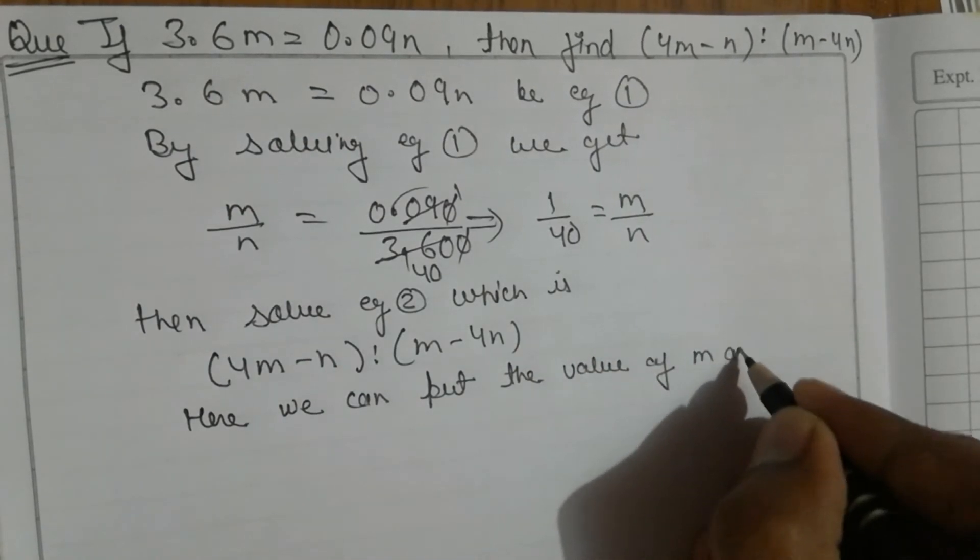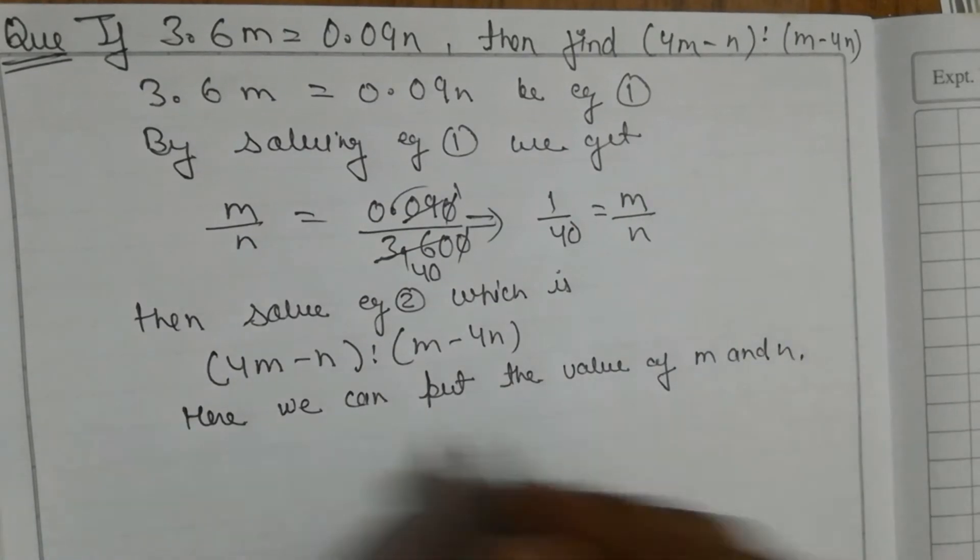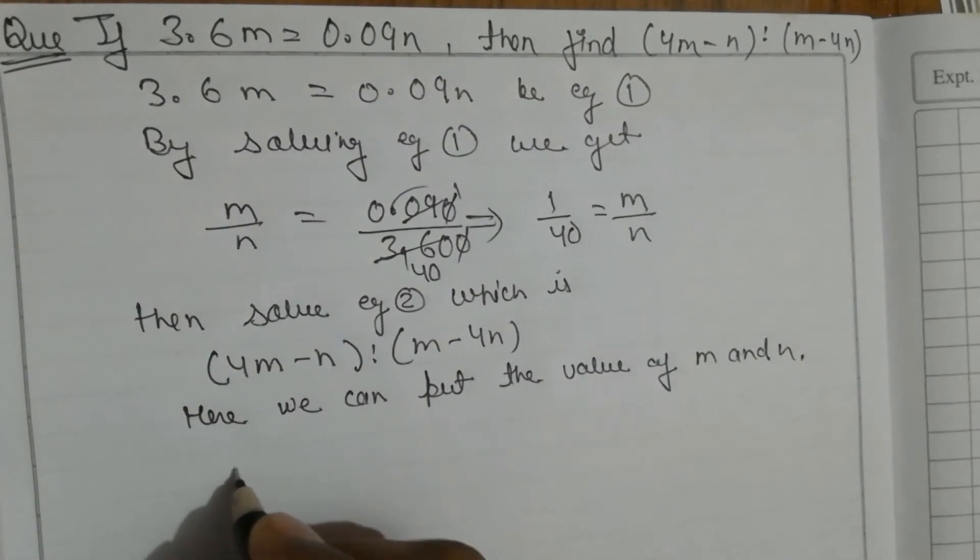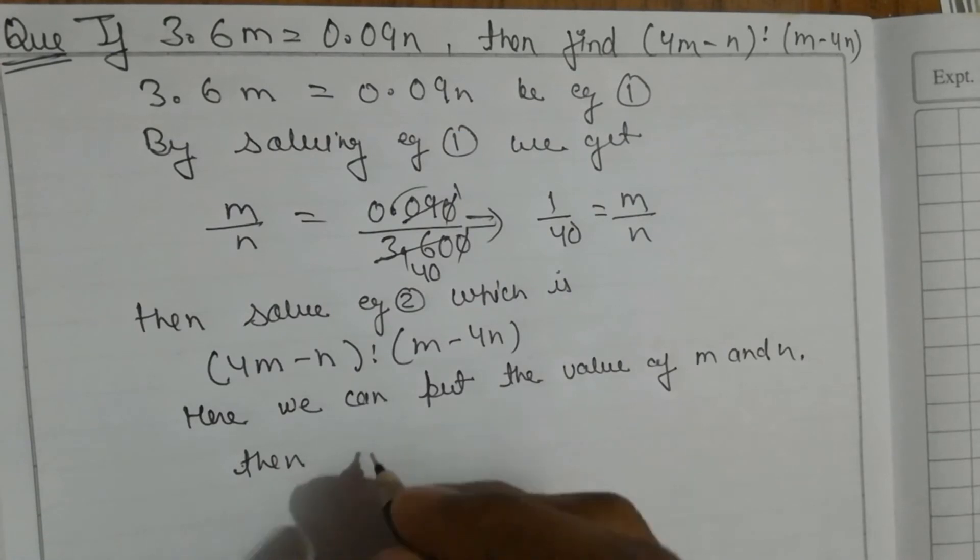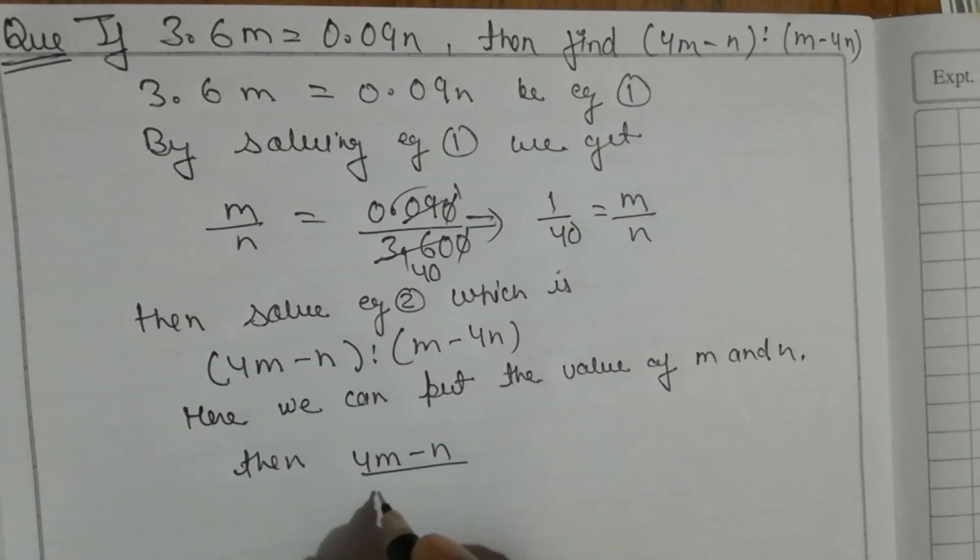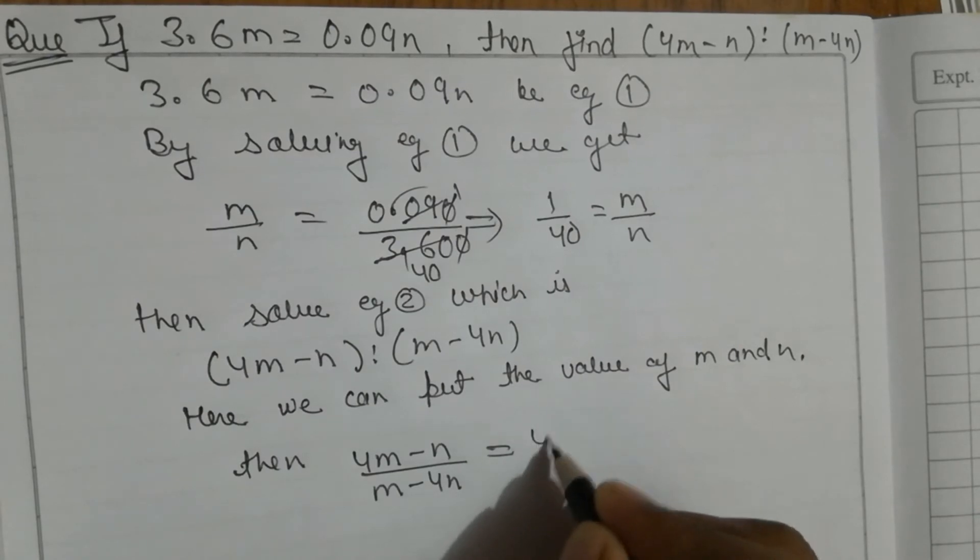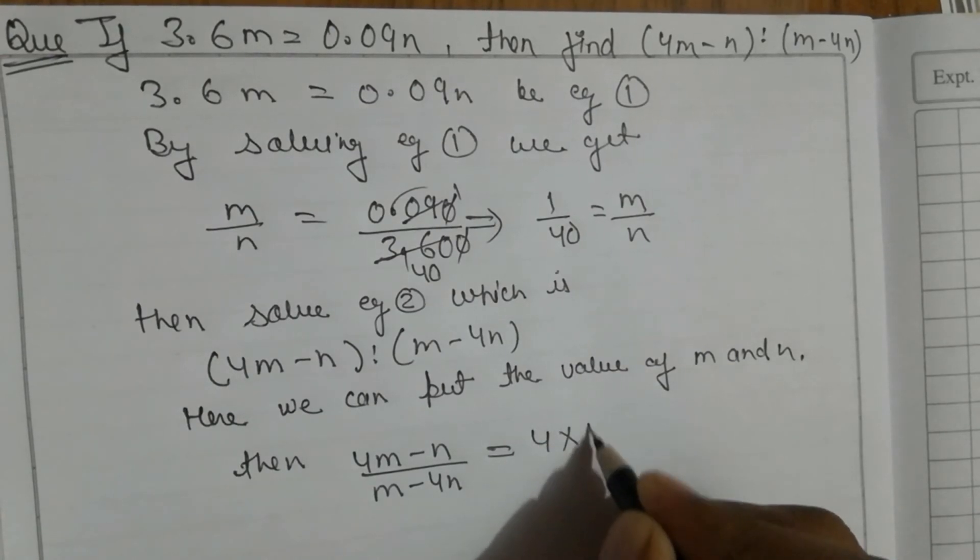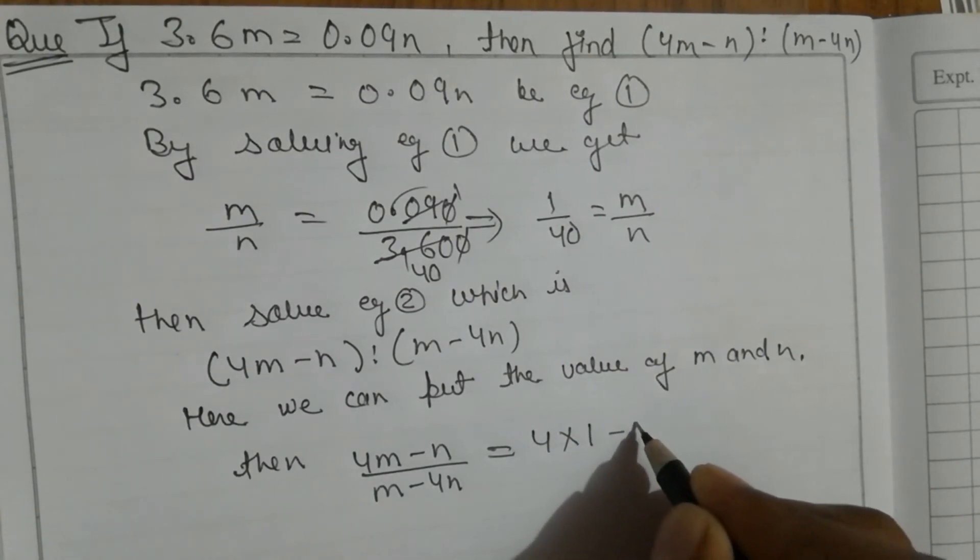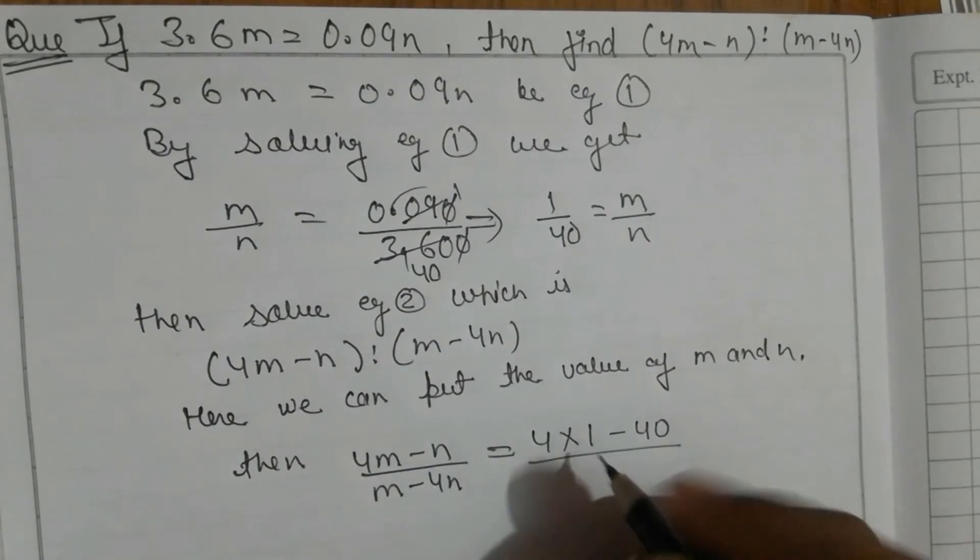Then (4m - n) divided by (m - 4n) can be written as 4 times 1 minus 40, divided by